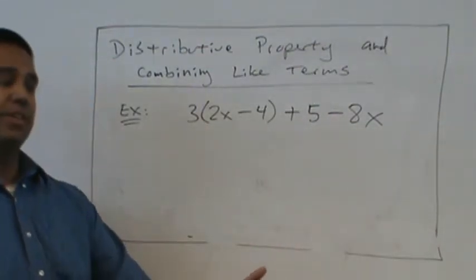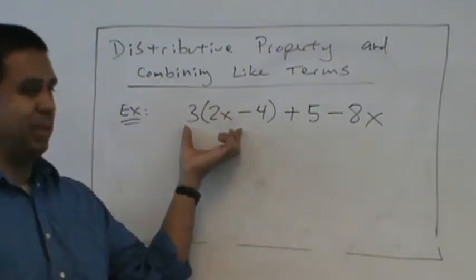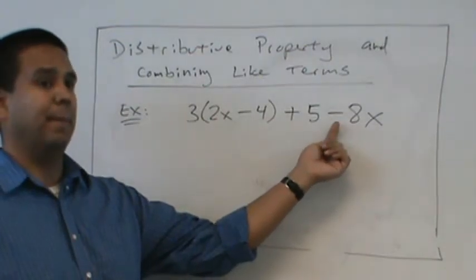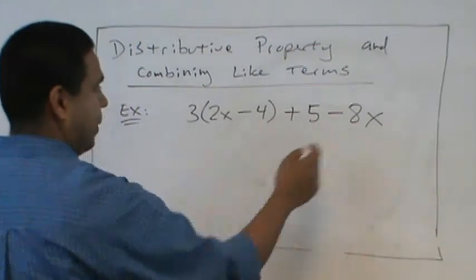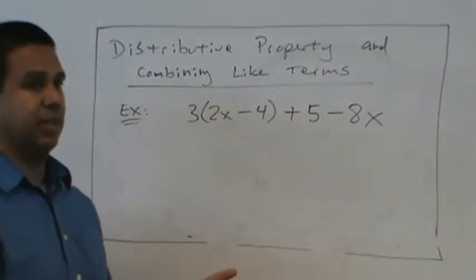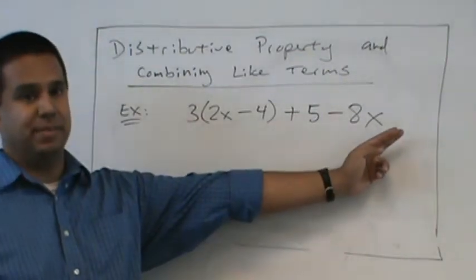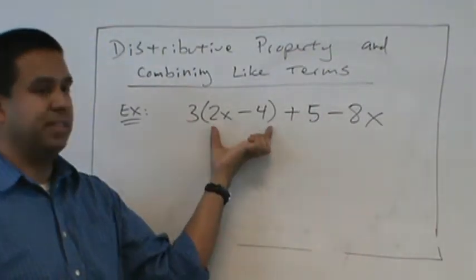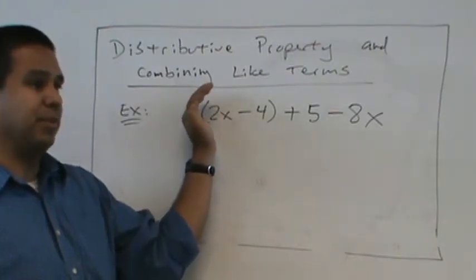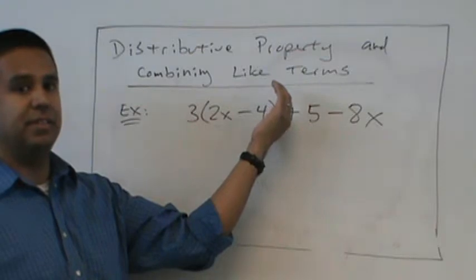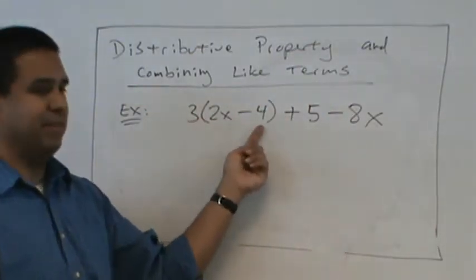Distribute. Because think about it. We're still doing order of operations. Don't you do parentheses? We multiply before we add or subtract. So let's multiply before we add or subtract. Now here's the crazy thing. Some students will just multiply that three with everything. Don't do that. We only go inside the parentheses. This parentheses, open parentheses, says start multiplying. This guy, close parentheses, says stop multiplying. Okay? Just whatever's in here.